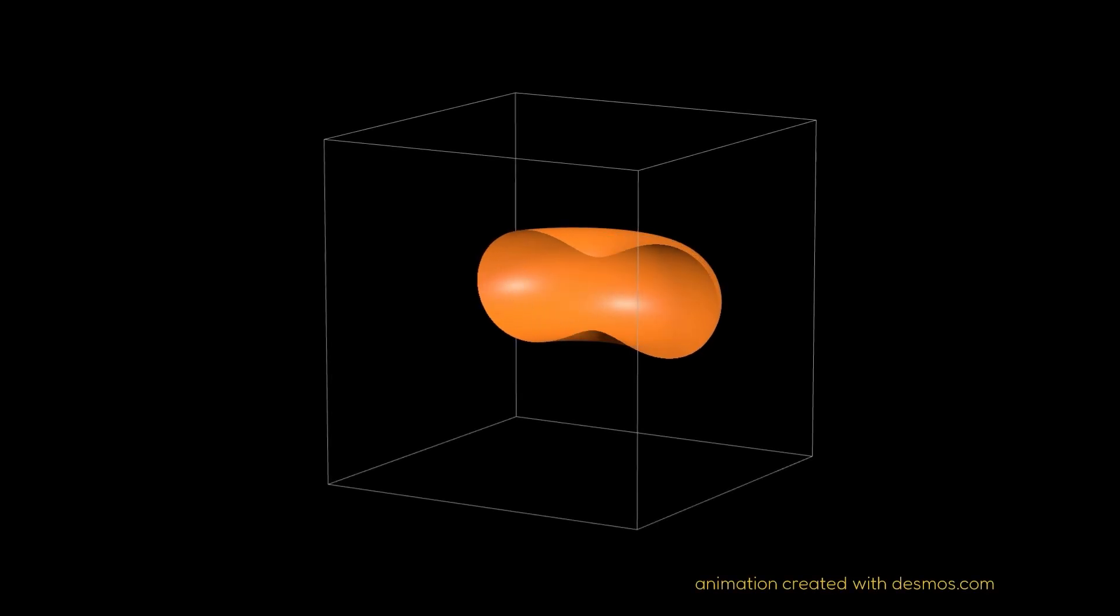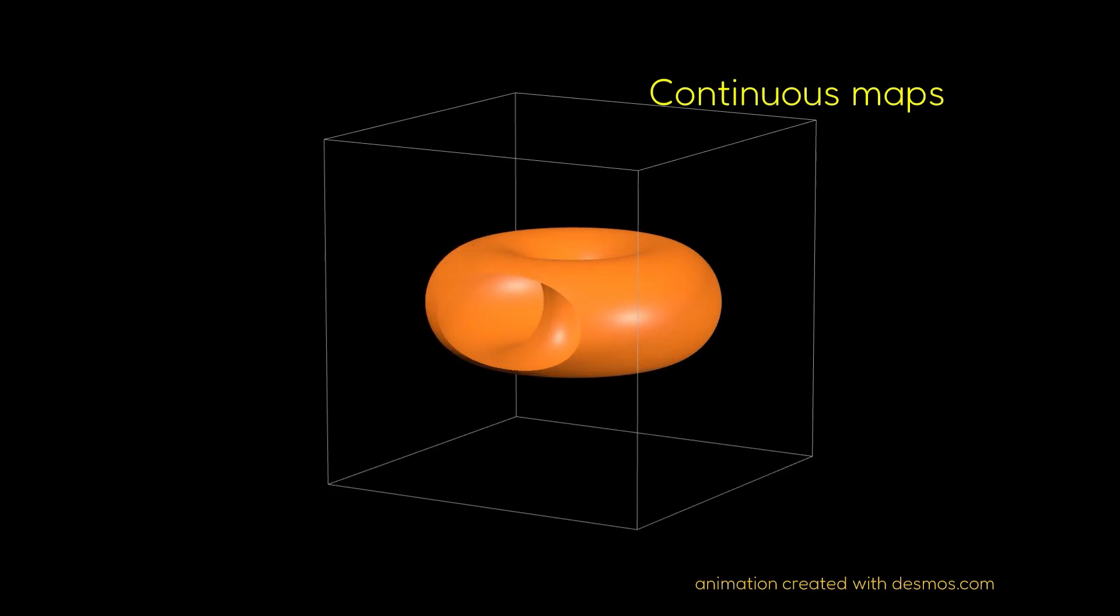To prove Brouwer's Fixed Point Theorem rigorously, mathematicians usually rely on topological spaces, continuous maps and the fundamental group. But today, we'll see a proof that is accessible even to students in their first years of high school. Ready? Let's begin!